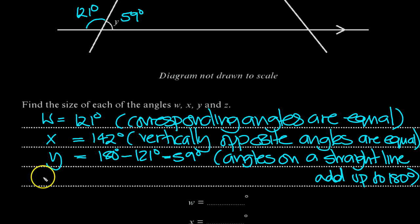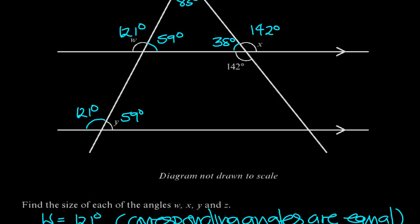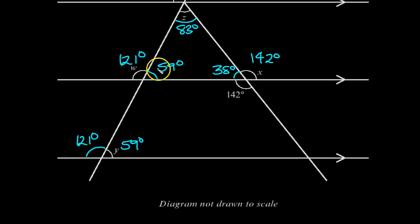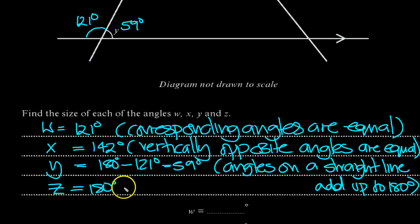And then W, X, Y, and Z was equal to 180. What was it, minus 59 minus the 38, wasn't it? Minus the 59 plus the 38 in a bracket, and we ended up with 83 degrees. And that was because the angles in the triangle are 180.